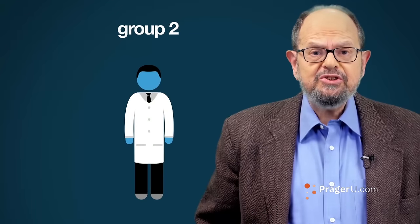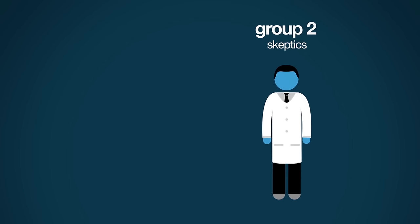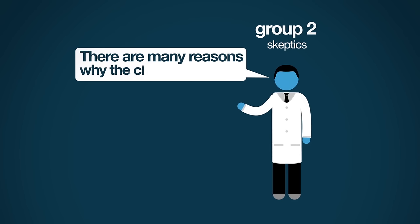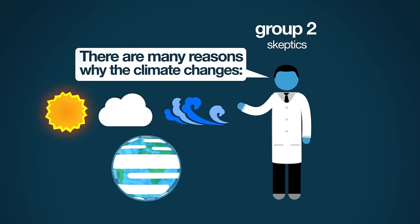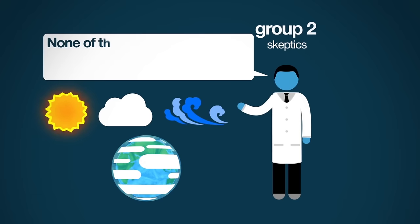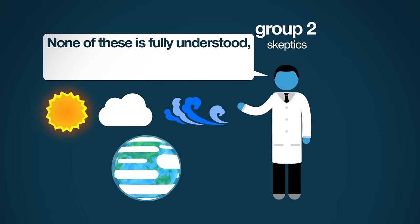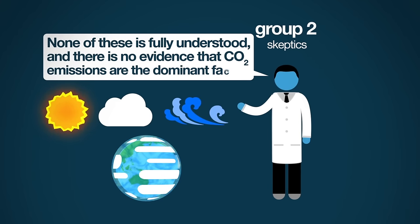Group two is made up of scientists who don't see this as an especially serious problem. It's the group I belong to. We're usually referred to as skeptics. We note that there are many reasons why the climate changes—the sun, clouds, oceans, the orbital variations of the earth—as well as a myriad of other inputs. None of these is fully understood, and there is no evidence that CO2 emissions are the dominant factor.